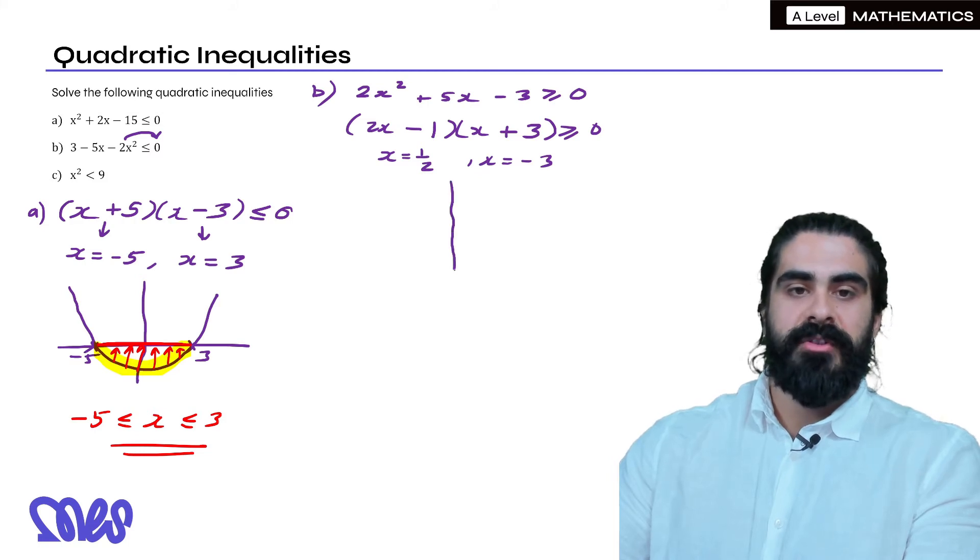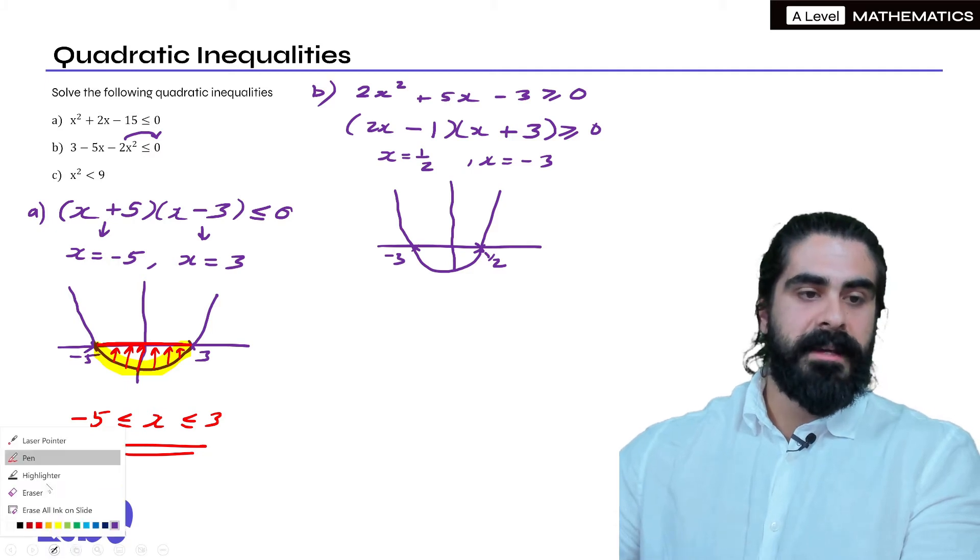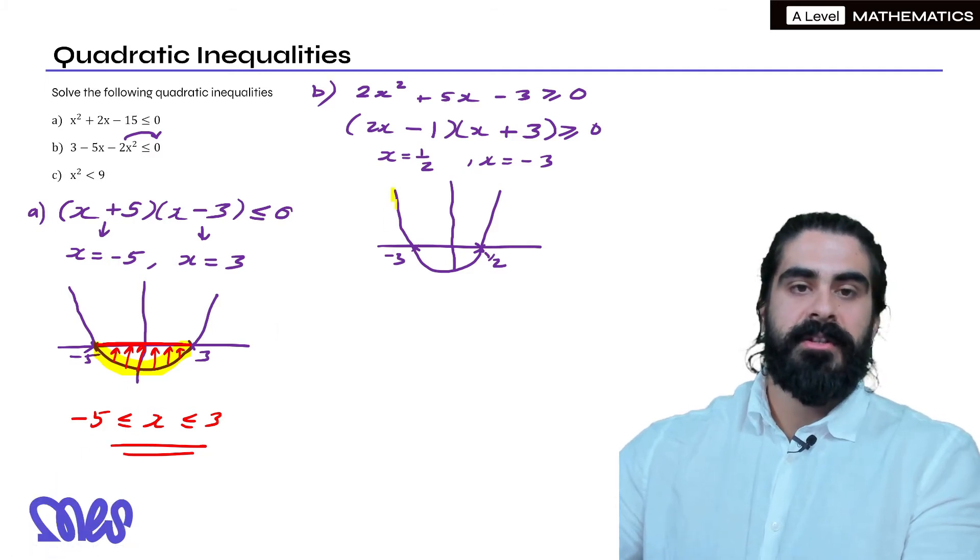So when we sketch our quadratic we're going to get a half and minus 3. So basic sketch here of the quadratic. Now here we want to know when is it bigger than 0. So when is the quadratic bigger or above the x-axis.